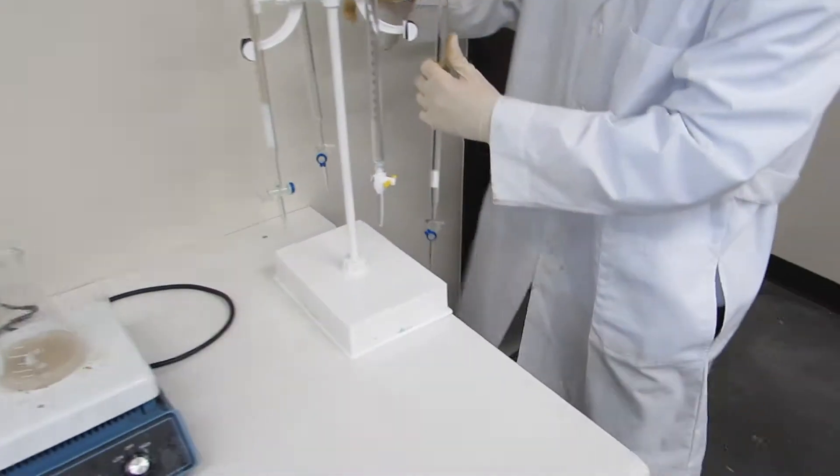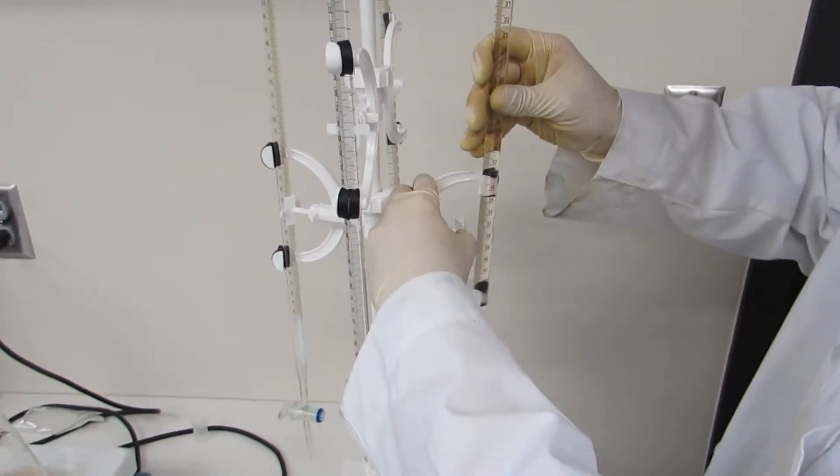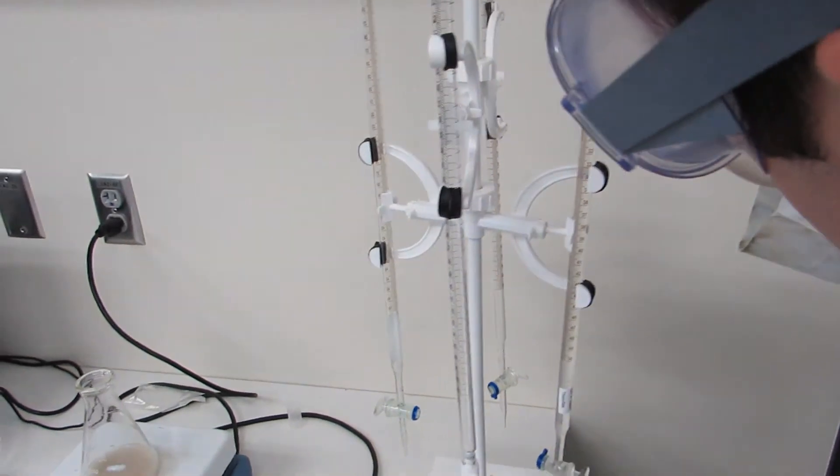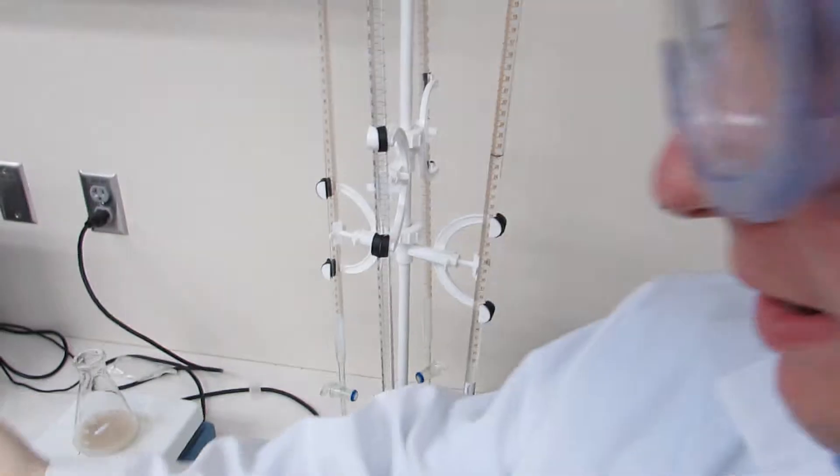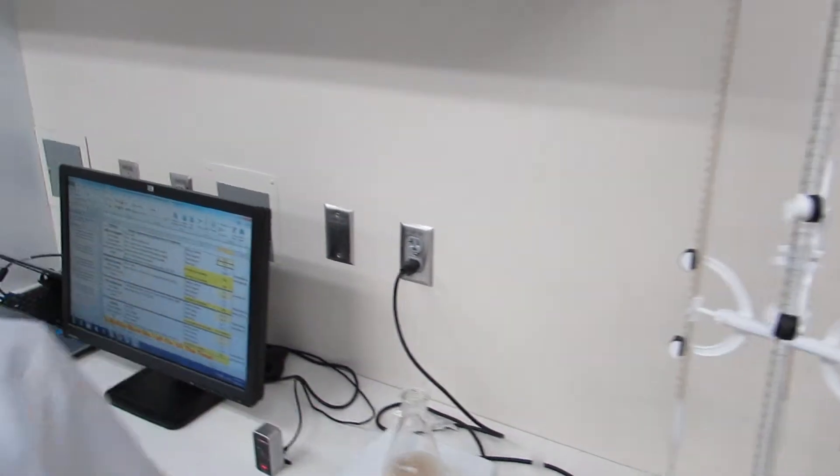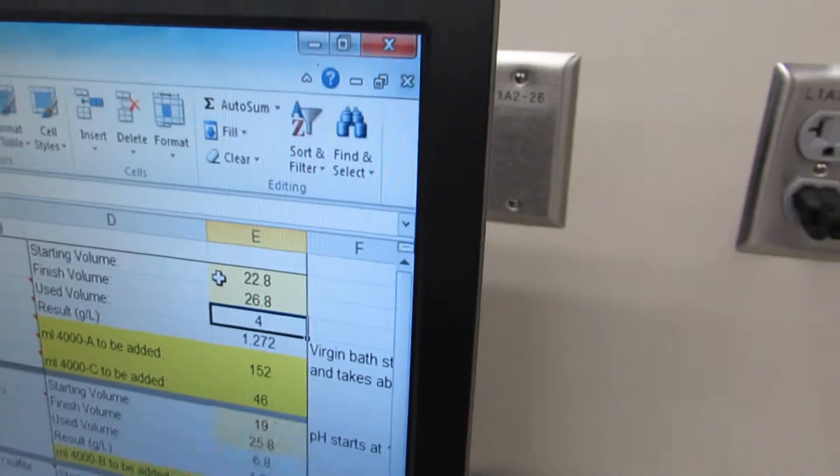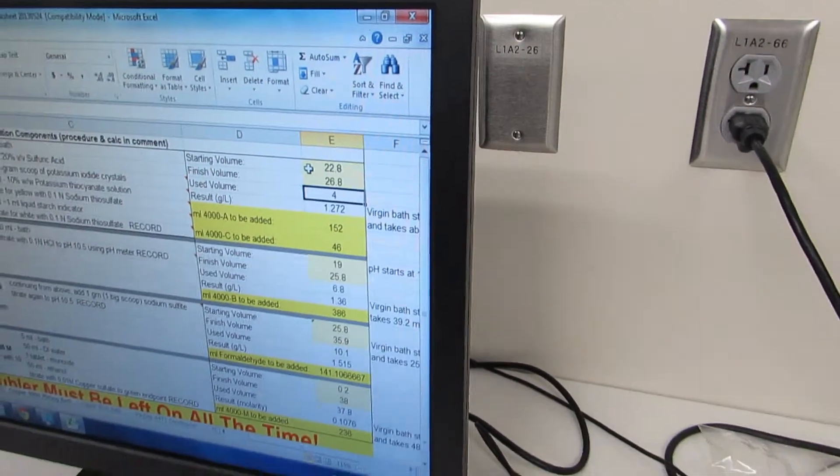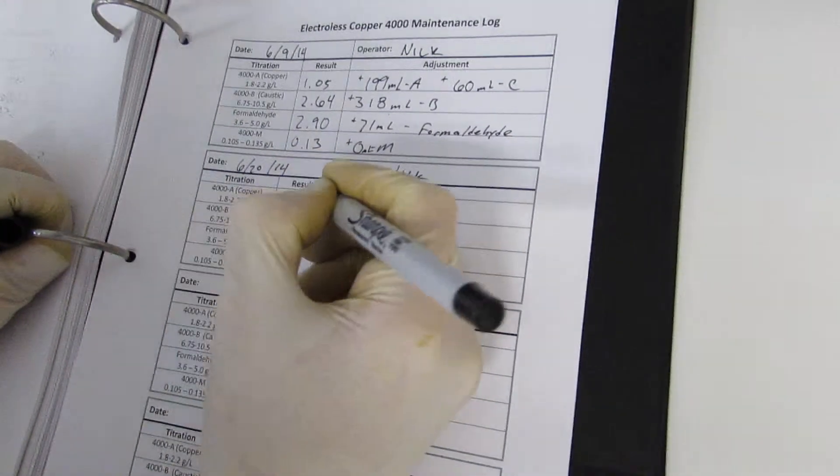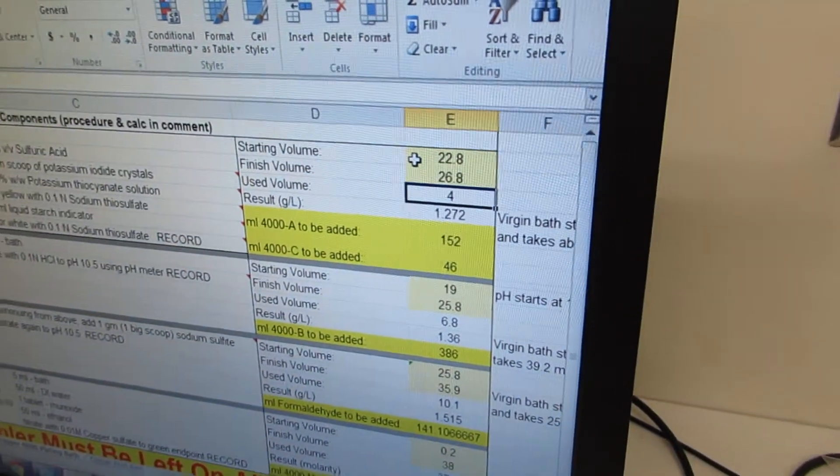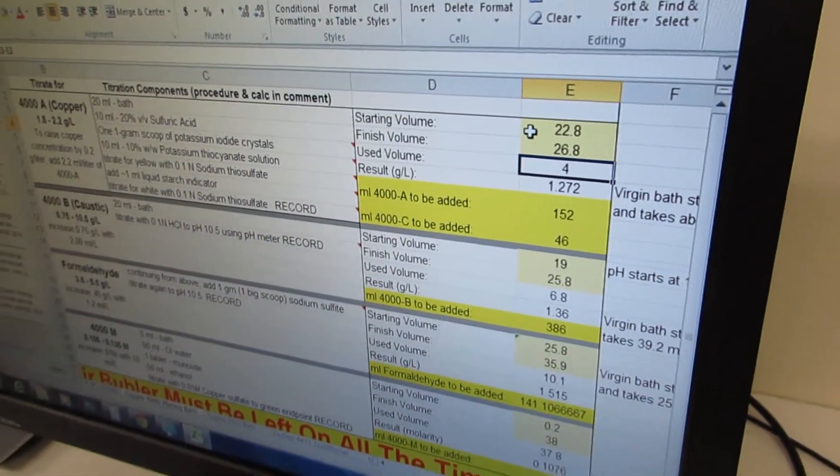So you replace the burette and measure its volume. We have 26.8. So we go back to the computer and in finished volume we enter 26.8. Hit enter. We used 4. So we take our pen out and record our result which is 1.272. And then we have to add 152 milliliters of A and 46 milliliters of C.